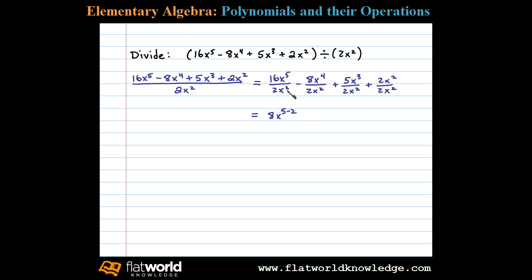Next, 8 divided by 2 is 4, giving us negative 4x to the 4 minus 2 power. Plus, here 2 does not divide evenly into 5, so we'll leave it as a fraction: 5 halves x to the 3 minus 2 power.